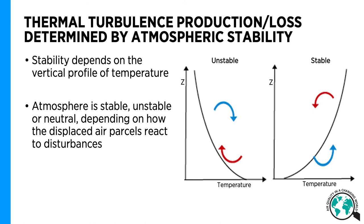Thus, whether the atmosphere is stable, unstable, or neutral also tells how displaced air parcels react to disturbances. In an unstable atmosphere, the air parcels will continue rising, whereas in the stable atmosphere, if there is a displacement of air parcels, those air parcels tend to return to their original position, indicating a very stagnant atmosphere.